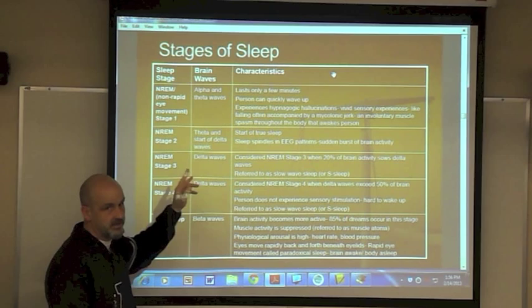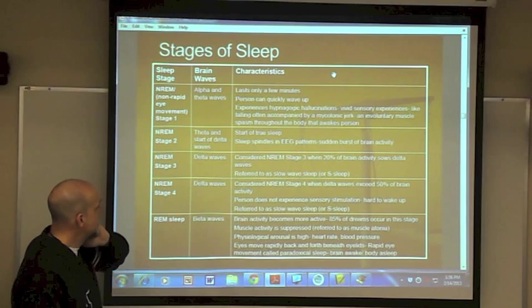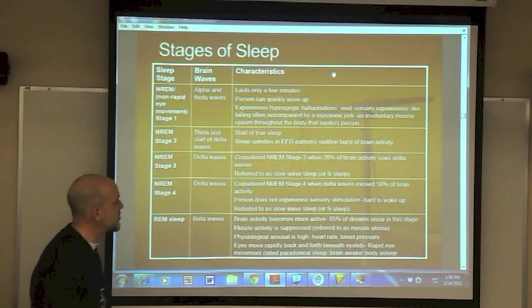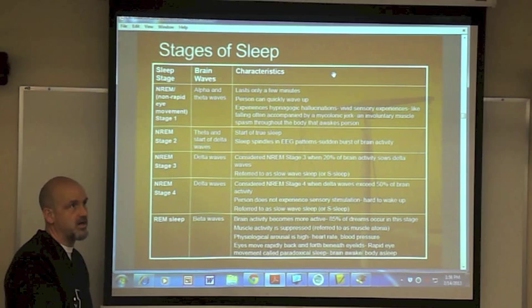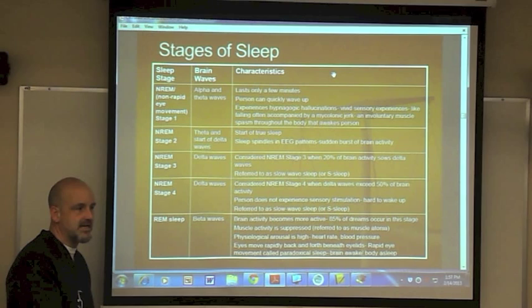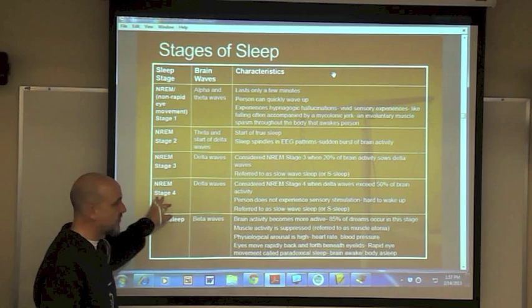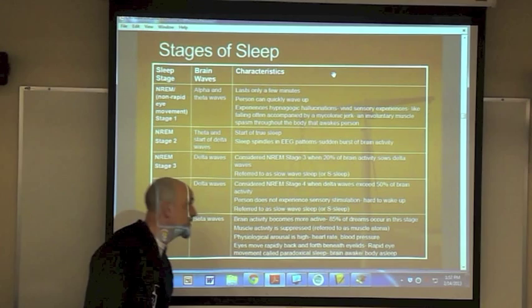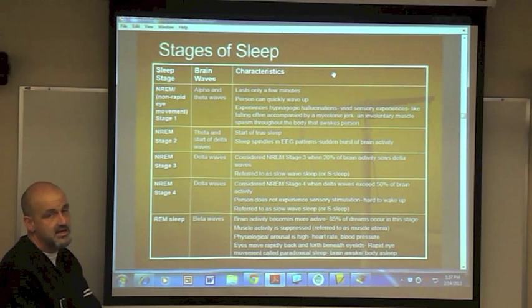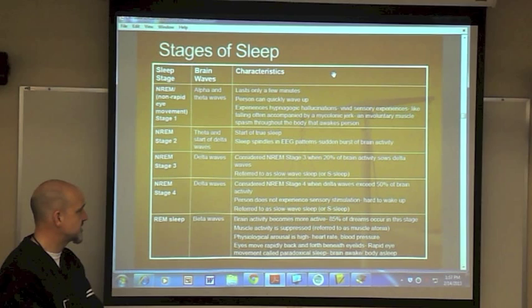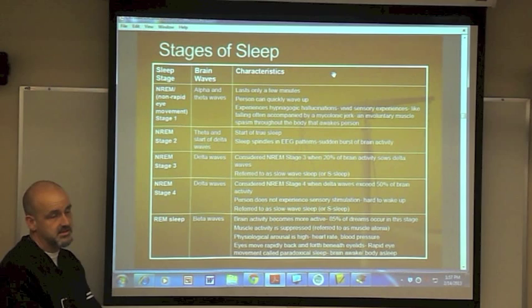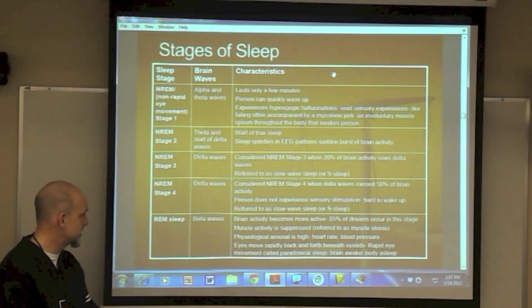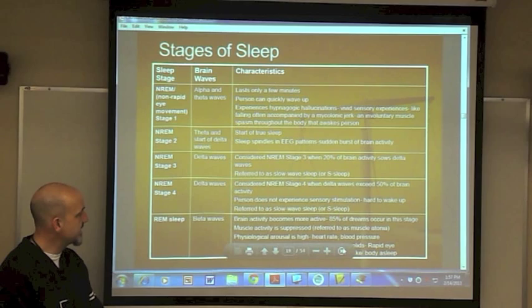NREM stage three is when 20% of brain activity shows delta waves — the person is almost in deep sleep and is unlikely to wake when a bell rings. NREM stage four is deep sleep with delta waves at about 50% of brain activity. The brain is essentially asleep. It takes real effort — probably a nudge — to wake someone from this stage. Stage four is also referred to as slow-wave sleep or S-sleep. Growth hormone is released by the pituitary gland during deep sleep, which is why children spend more time here than adults.